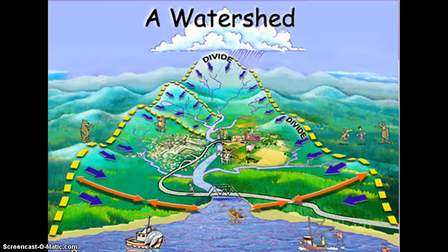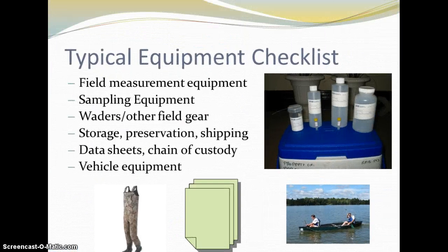Make sure all samplers are trained properly. There are several important components to make a good water quality sampling design, such as equipment, training, and processing. A typical equipment checklist will include lists for all sampling project components.